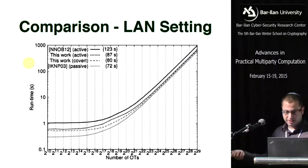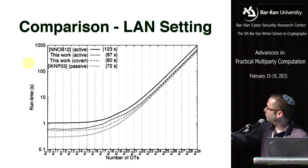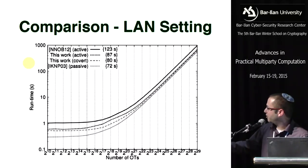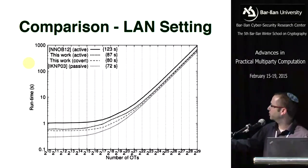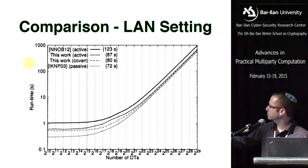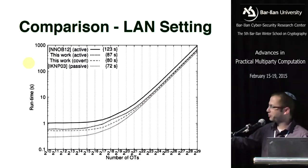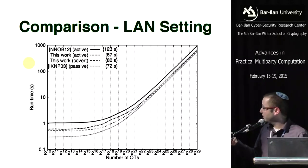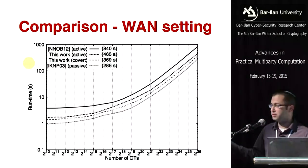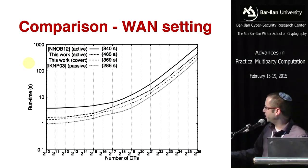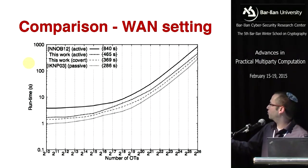Comparing with prior work for 2^26 OTs: in the LAN setting, the passive-security baseline takes about 72 seconds; our protocol for covert security takes 80 seconds, active security adds 7 more seconds to get 87 seconds, and NNOB takes 123 seconds. In the WAN setting, the graph is on a logarithmic scale — differences that appear small are actually factors of 10x or more between protocols.